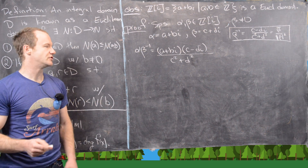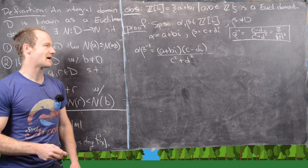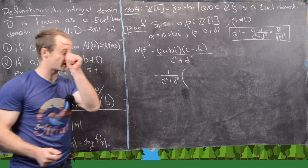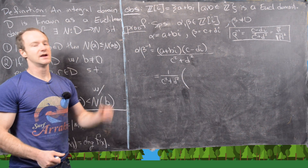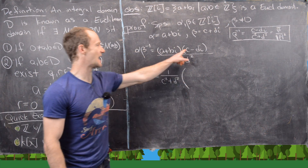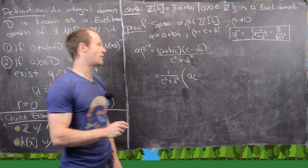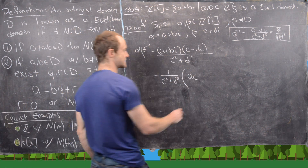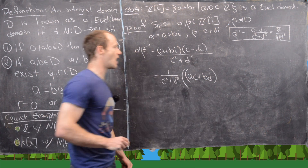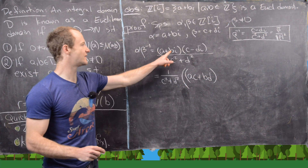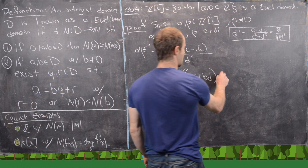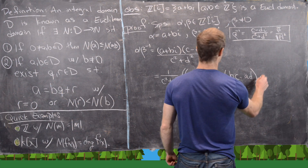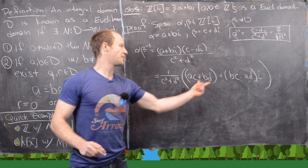Now I want to multiply out the numerator and decompose it into real and imaginary parts. Taking the factor 1/(c² + d²) out front and foiling: the real parts are ac and bd (since b·(−d)·i² = +bd), and the imaginary parts are bc and −ad. So we have real part (ac + bd) and imaginary part (bc − ad).